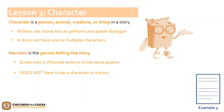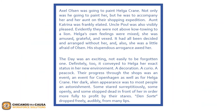Now that we went over character, let's review our next written example found on page 104. The excerpt begins: Axel Olsen was going to paint Helga Crane. Not only was he going to paint her, but he was going to accompany her and her aunt on their shopping expedition. Aunt Katrina was frankly elated. Uncle Powell was also visibly pleased. Definitely, they were not above kowtowing to a lion. Helga's own feelings were mixed. She was amused, grateful, and vexed. It had all been decided and arranged without her. And also, she was a little afraid of Olsen. His stupendous arrogance awed her.